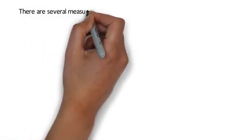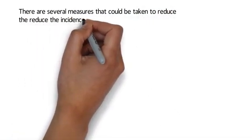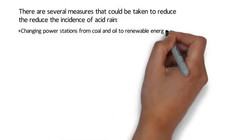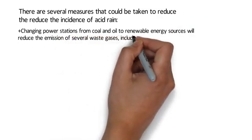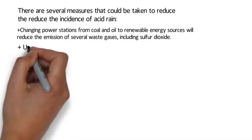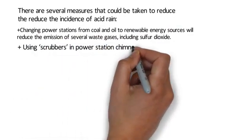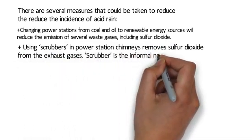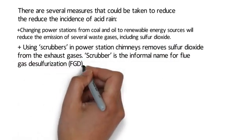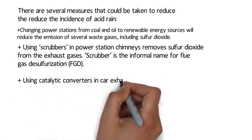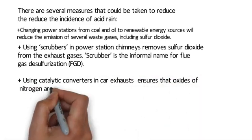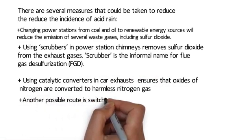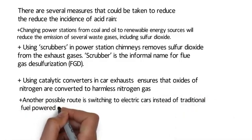There are several measures that could be taken to reduce the incidence of acid rain. Changing power stations from coal and oil to renewable energy sources will reduce emissions of several waste gases, including sulfur dioxide. Using scrubbers — or flue gas desulfurization (FGD) — in power station chimneys removes sulfur dioxide from exhaust gases. Using catalytic converters in car exhaust ensures that oxides of nitrogen are converted to harmless nitrogen gas. Another possible route is switching to electric cars instead of traditional fuel-powered cars.